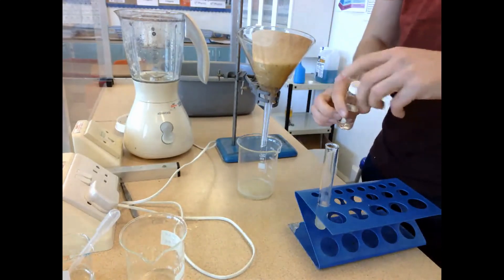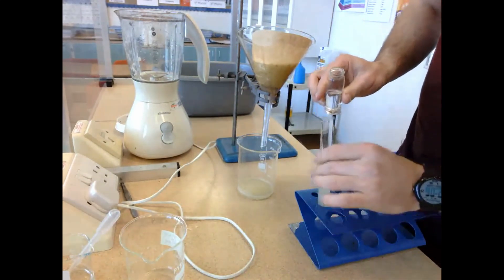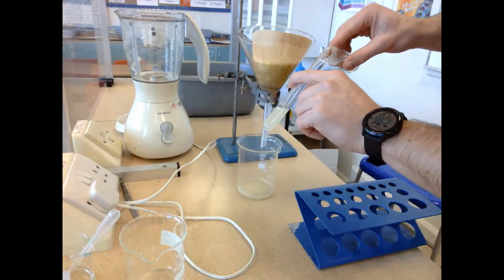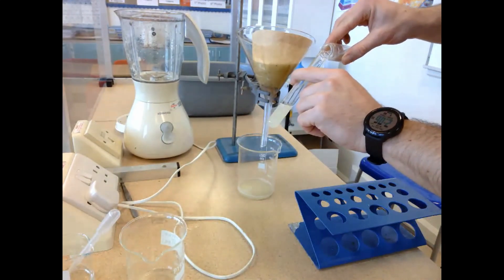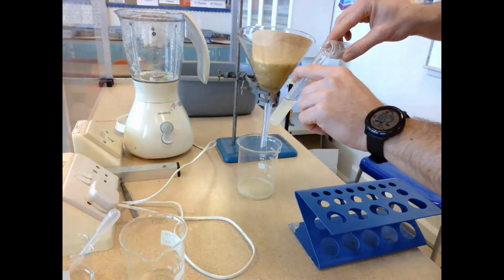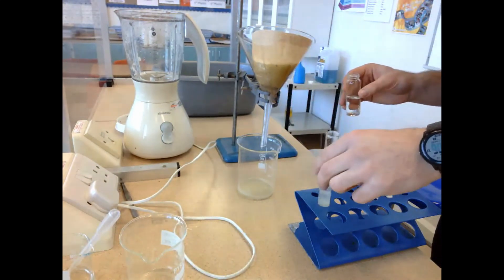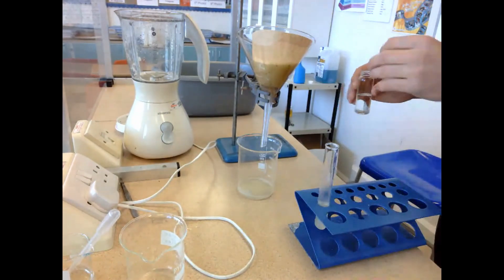So instead we jump straight to the step whereby we get ice cold ethanol and we're going to trickle this down the side of the test tube. And the reason we use ice cold ethanol is because DNA is insoluble in ice cold ethanol and therefore it'll begin to precipitate out of solution and will become visible as groups of white threads.